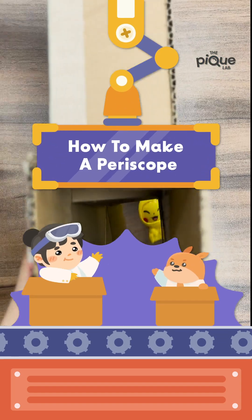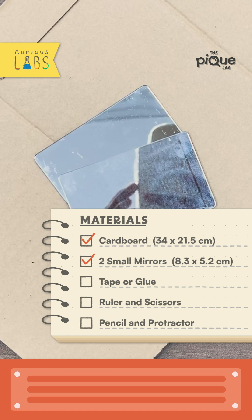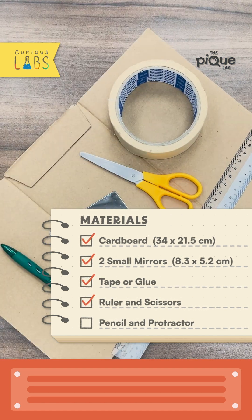Let's make a periscope for this experiment. You will need cardboard, two small mirrors, tape or glue, ruler, scissors, pencil, and protractor.